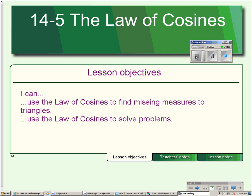This is lesson 14.5. It's about the law of cosines. The law of cosines is used for finding missing measures in a triangle, either angles or sides.